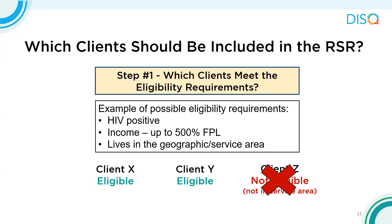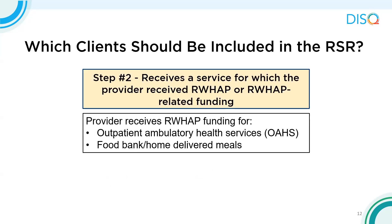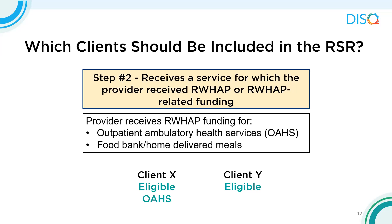The second step in determining which clients to include is ensuring the client has received a service for which the provider received Ryan White or Ryan White related funding during the reporting period. In this example, the provider agency receives Ryan White funding for outpatient ambulatory health services, or OHS, and food bank or home delivered meals. Client A received only an OHS service, which the provider was funded for with Ryan White funding. However, client B received only medical transportation assistance, which was not funded with Ryan White funding. So client A should be included and client B should not.